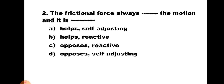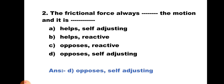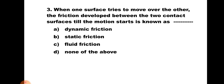Question number two: The frictional force always __ the motion and it is __ — a) Helps self-adjusting, b) Helps reactive, c) Opposes reactive, and d) Opposes self-adjusting. The frictional force always opposes the motion and it is self-adjusting. Whenever the external force applied is less than the limiting frictional force, the frictional force adjusts to that lesser value and increases up to the limiting frictional force, thereafter it does not increase, which causes motion. Hence the correct answer is d) Opposes and self-adjusting.